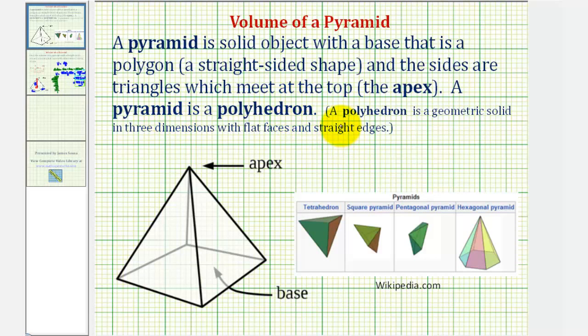For example, a cube or rectangular prism that looks something like this does satisfy the conditions for a polyhedron, but it is not a pyramid because it does not have sides that are triangles that meet at the top called the apex.